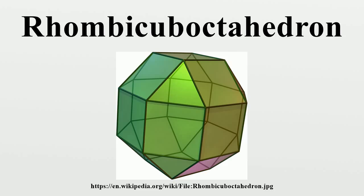Dissection: The rhombic arboctahedron can be dissected into two square cupola and a central octagonal prism. A rotation of one cupola creates the pseudorhombic arboctahedron. Both of these polyhedra have the same vertex figure, 3.4.4.4.